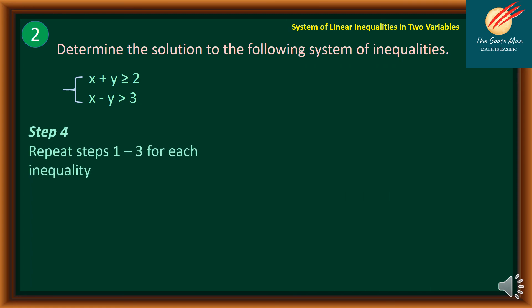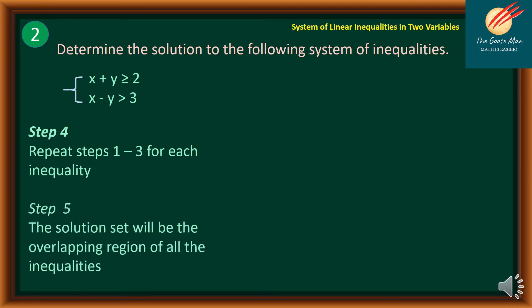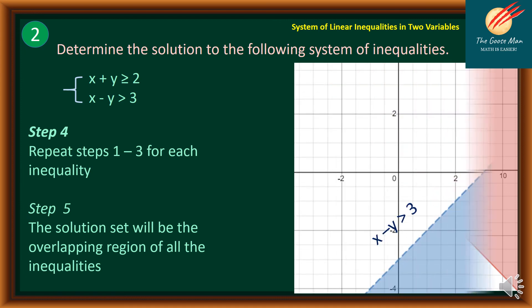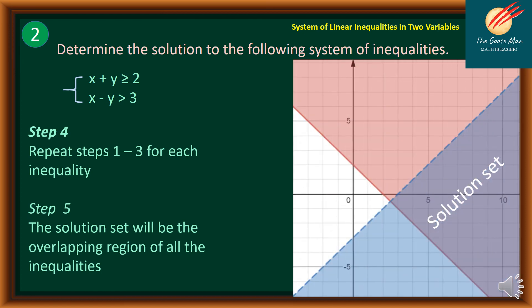Since we are done with steps 1 to 3 for both inequalities, step 5 is to find the overlapping region. This is the graph of x + y ≥ 2 and x minus y > 3. The overlapping region is the solution set. Note that the origin (0, 0) is not part of the solution set, but the point (5, 0) is, as it lies in the overlapping region of all the inequalities.